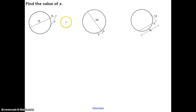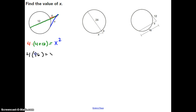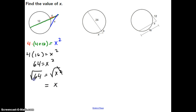Let's do examples. Short part on the outside (4) times the whole thing (4 plus 12) equals the tangent squared. So 4 times 16 equals X squared; 64 equals X squared. Take the square root of both sides — the square root of 64 is 8, so X equals 8. For the second example: 3 times (3 plus 24) equals X squared; 3 times 27 equals X squared; 81 equals X squared; X equals 9.